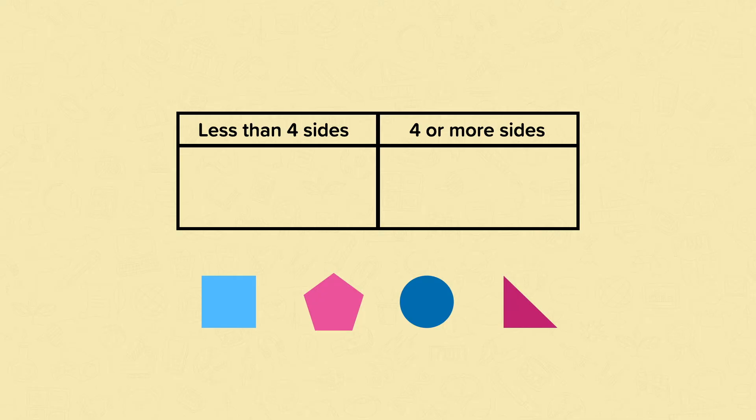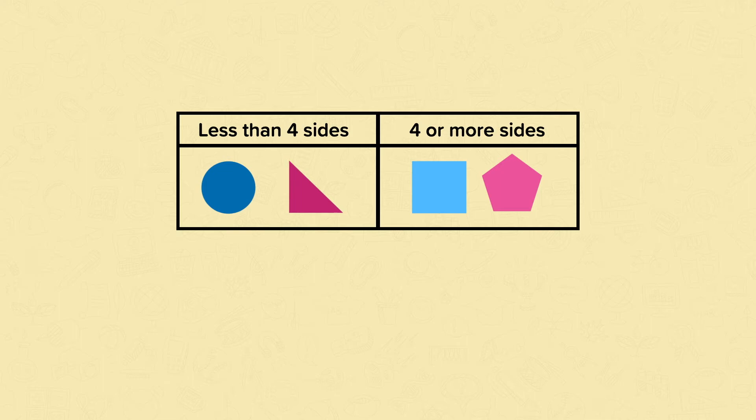Now we can begin to sort the shapes. The square has four sides and the pentagon has five sides, so they both need to go in the column under the heading 'four or more sides'. The circle has one curved side and the triangle has three sides, so they both need to go in the column underneath the 'less than four sides' heading.